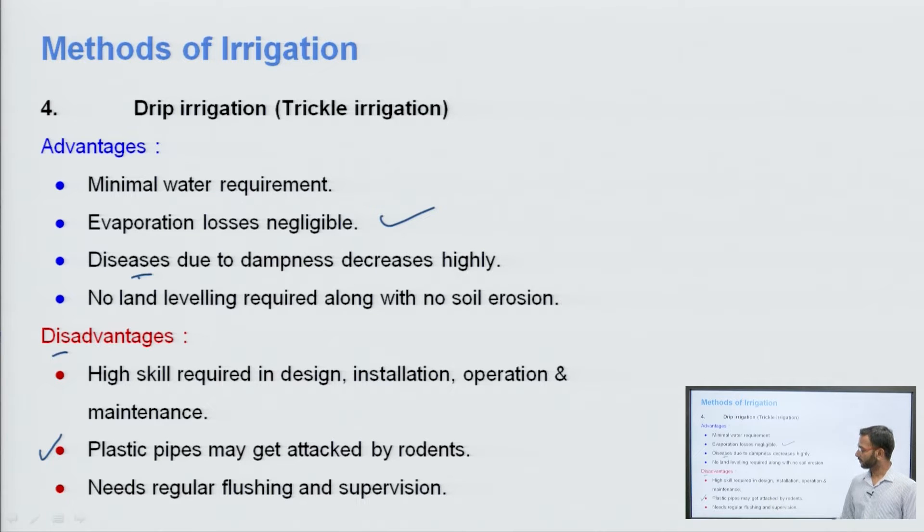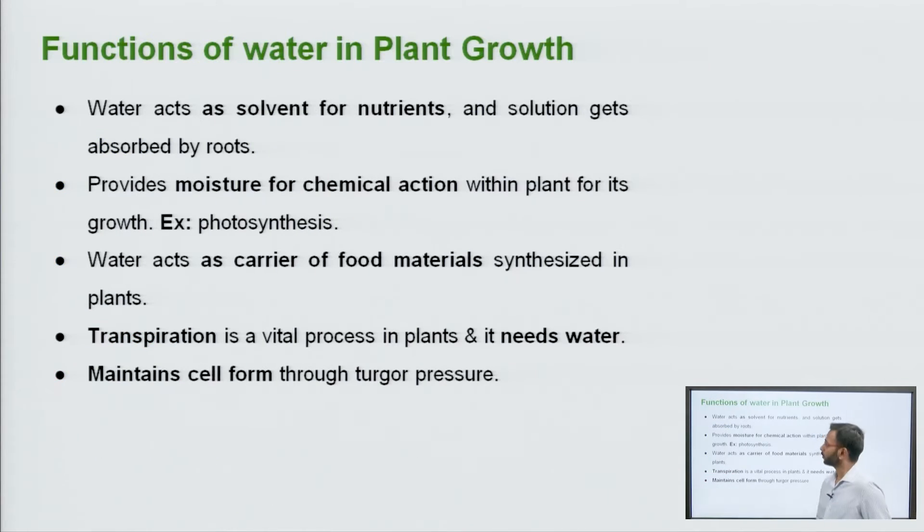Disadvantages ki adhi hum baat karayi. It is highly skilled work. So high skill is required in the design, installation, operation and maintenance of the drip irrigation system. Joh poora system dikhaya us ke liye kaffi skill ki zoroat padhti hai. Next is the plastic pipes which may get attacked by the rodents. Jaisa ki aapka rats ho gaya. It needs regular flushing and supervision. Because when we are applying the fertilizer or the nutrient with the help of the pipes, waha peh woh ek tariki ke salts hain. Salts kya hoongay? Pipe me deposit ho jayenge jiske karan woh pipe ki efficiency ko kam kar deenge. Isi liye it requires regular flushing and supervision.